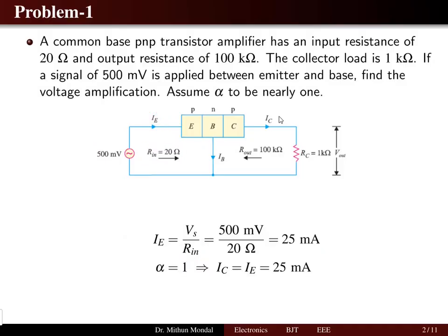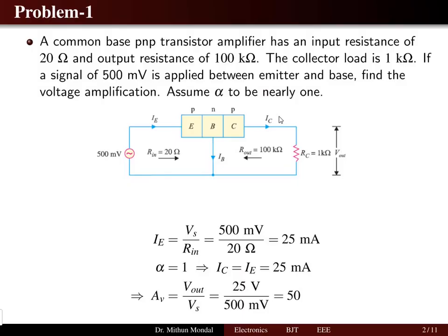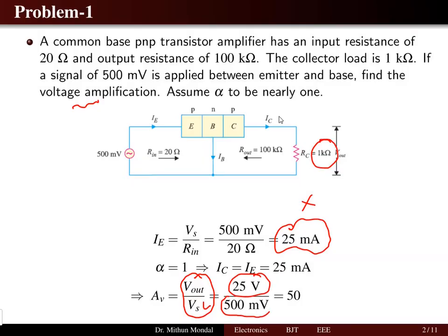Since alpha is nearly 1, all the emitter current flows toward the collector and the base current is negligible. So we take the collector current to be equal to the emitter current, which is 25 milliamps. The voltage amplification equals output voltage divided by input voltage. Output voltage is 25 milliamps multiplied by 1 kilohm, which gives 25 volts. Input voltage is 500 millivolts, so the voltage amplification factor is 50. This is the voltage gain.